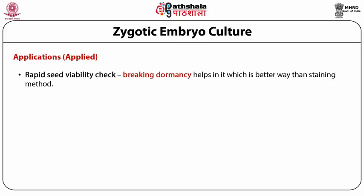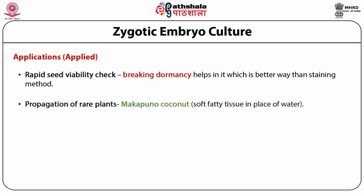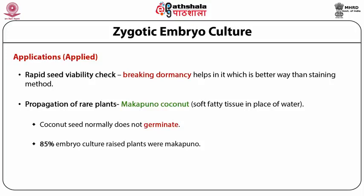A very interesting application of embryo culture is the propagation of rare plants. We know that a coconut has a creamy center with coconut water, but there is a variety called makapuno, which in place of water has a soft, fatty, delicious tissue — considered a delicacy in some parts of the world. The seeds of makapuno cannot germinate. It was found that if you culture the excised embryo of makapuno, 85% of the plants raised were truly makapuno. So embryo culture provides a new approach to the multiplication of this rare plant, which yields a high percentage of makapuno nuts.